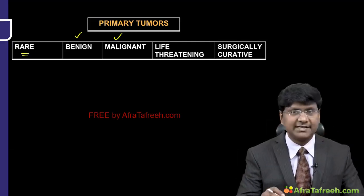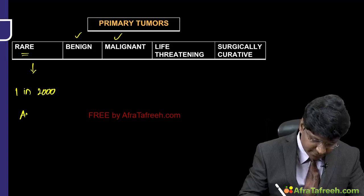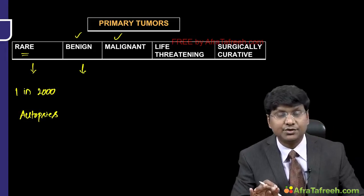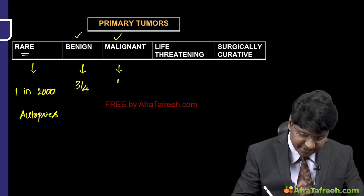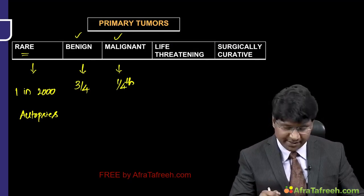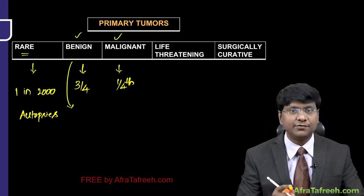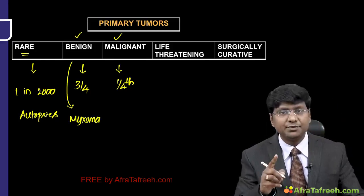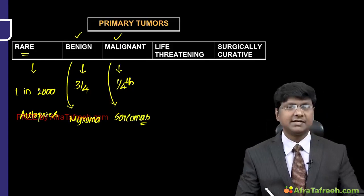Primary tumors are very rare — found in one in 2,000 autopsies. Of the primary tumors, the most common are benign tumors; the remaining 25 percent — one-fourth — are malignant tumors. Among benign tumors (three-fourths of primary tumors), the majority are myxomas, whereas malignant tumors are mainly sarcomas.